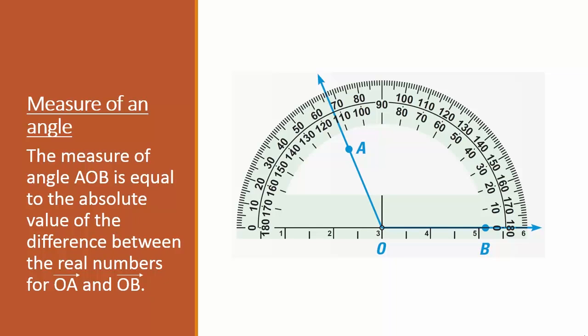Measure of an angle. The measure of angle AOB is equal to the absolute value of the difference between the real number of ray OA and ray OB. Usually when we're talking about the measure of an angle, you'll see it written like this. Measure of angle. In this case we're looking at AOB. So measure of angle AOB.